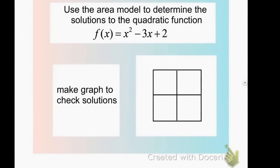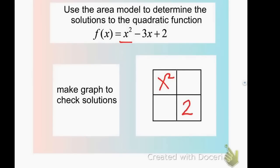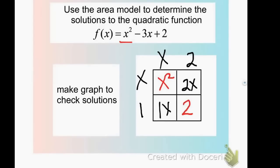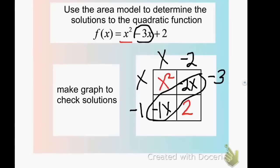Let's look at a different example: x squared minus 3x plus 2. I put x squared in the first box and 2 in the last box. x times x gives x squared, and numbers that multiply to give 2 are 2 times 1. That gives 2x and 1x, combining to 3x — but the middle term is negative 3x. So we make both negative, giving negative 2x and negative 1x, which combine to give negative 3x.